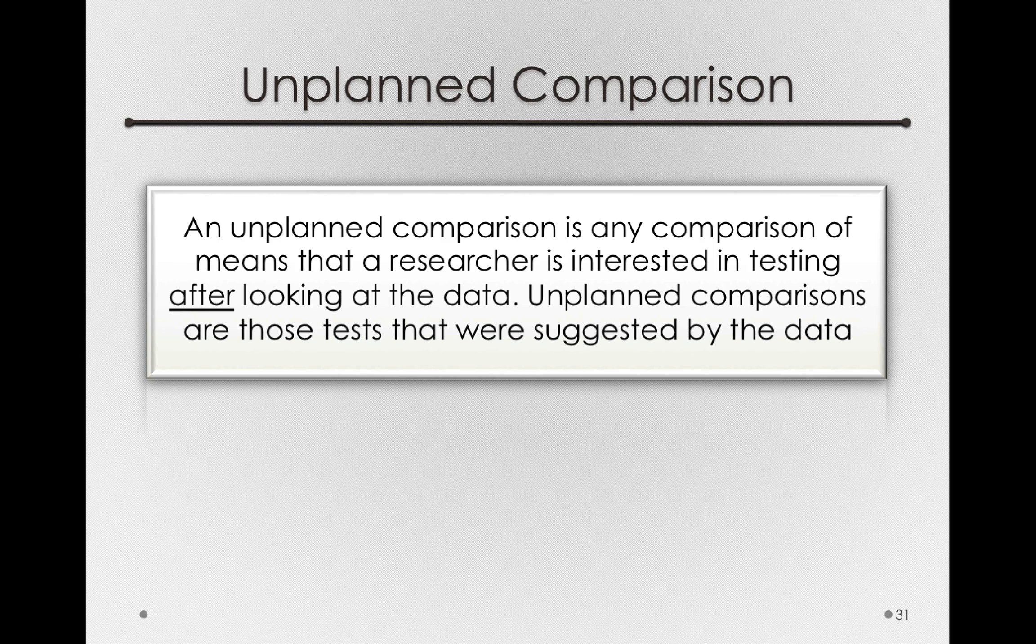We will have to be more strict with our corrections for unplanned comparisons because unplanned comparisons allow you to capitalize on chance. If we just fit 100 different means in an ANOVA model and only choose to look at the two that are most different, that unplanned comparison is actually capitalizing on chance. Because if the null hypothesis is true, you don't know which means will be most different by chance alone. So if you choose to only test the two that happen to be most different, you'll raise the probability that you'll reject the null for that comparison. So an unplanned comparison will require a stricter correction.